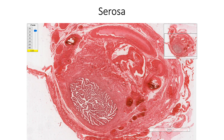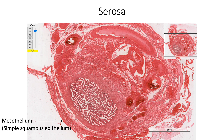The serosa is lined by an outer mesothelium which is made up of simple squamous epithelium, and it has sub-serosal vascular connective tissue.